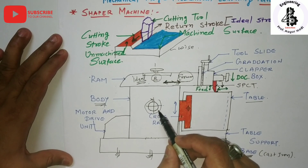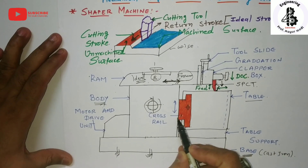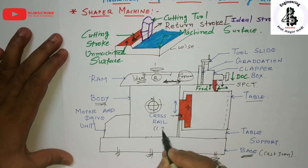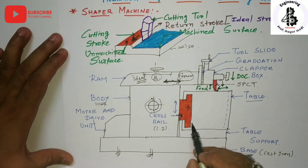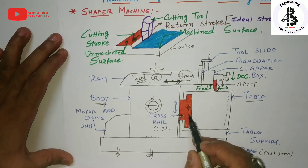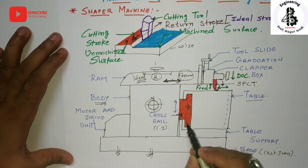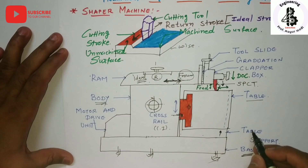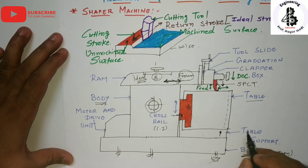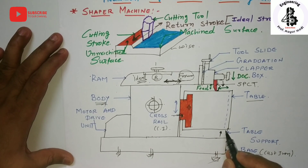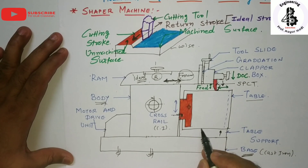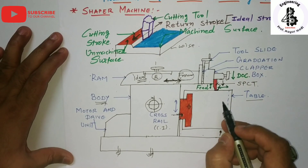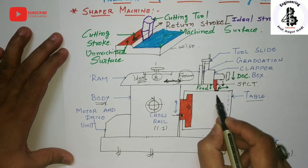The next important part is the cross rail, which you can see here. The cross rail is a cast iron component generally attached to the front of the vertical guideways. It carries two mechanisms: one for elevating the table according to the height, shape, and size of the products, and a second for cross movement of the table. The cross rail helps accommodate different sizes of jobs, allowing easy positioning of the cutting tool relative to the workpiece.